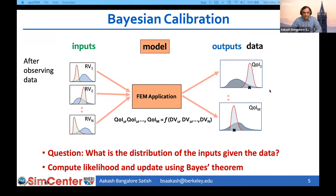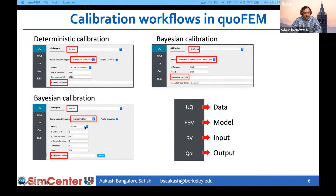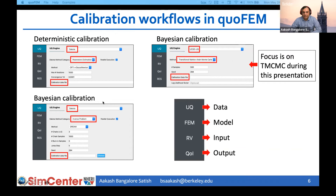There are three options in quoFEM for running calibration workflows. Two are part of the Dakota UQ engine, and the third is under the UCSD UQ engine. There are four components in defining the calibration problem: the data, the model, the inputs, and the outputs. In all three workflows, the data is provided in the UQ panel along with selecting the UQ method, the model is specified in the FEM panel, the inputs are defined in the RV panel, and the outputs are defined in the QI panel. During this presentation, the focus will be on TMCMC, since the calibration options in the Dakota engine have already been presented in the previous quoFEM tool training workshop.